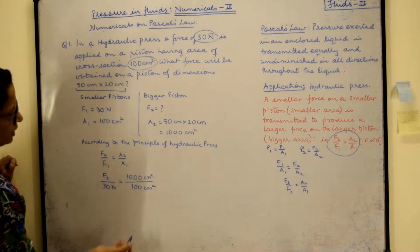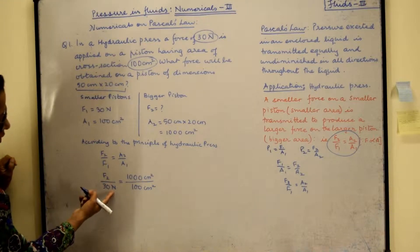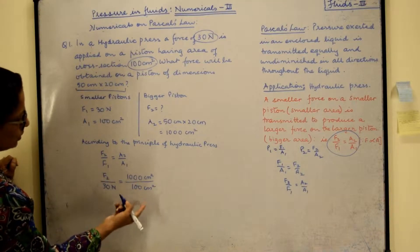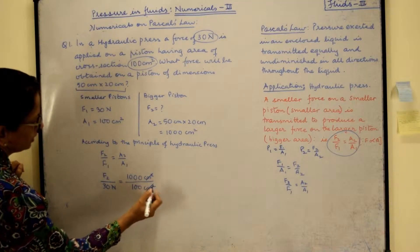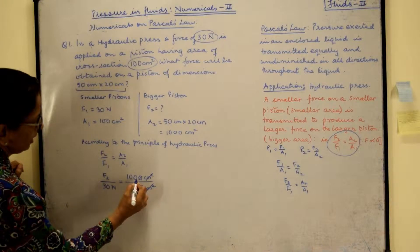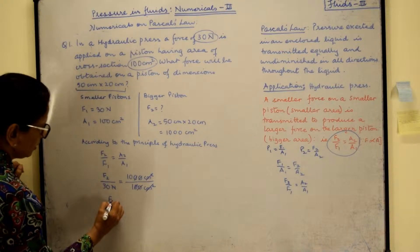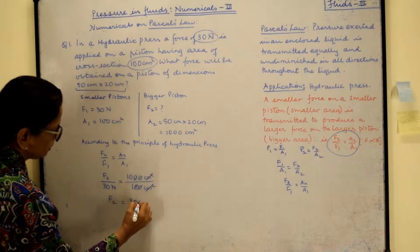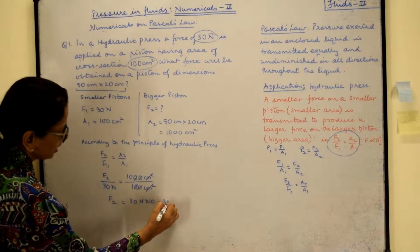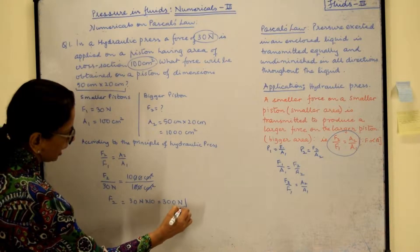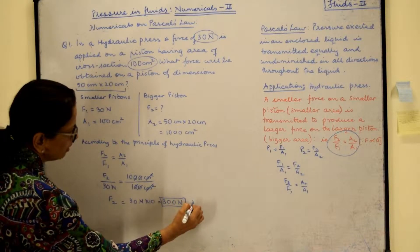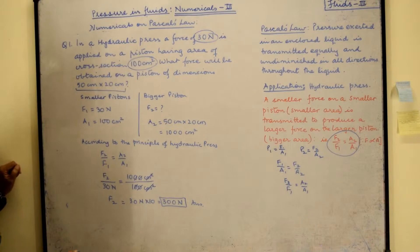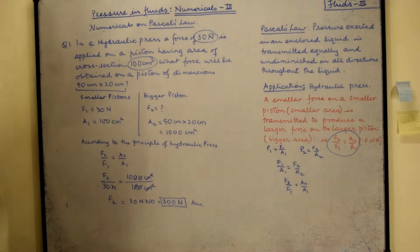Now there is no need to convert this into SI although this is in newton because it's a ratio. So in ratio this will get cancelled anyway and you will get F2 equal to 30 newton multiplied by 10, so that gives you 300 newton. And this is our answer for the force that is going to be exerted or will be obtained on the bigger piston.